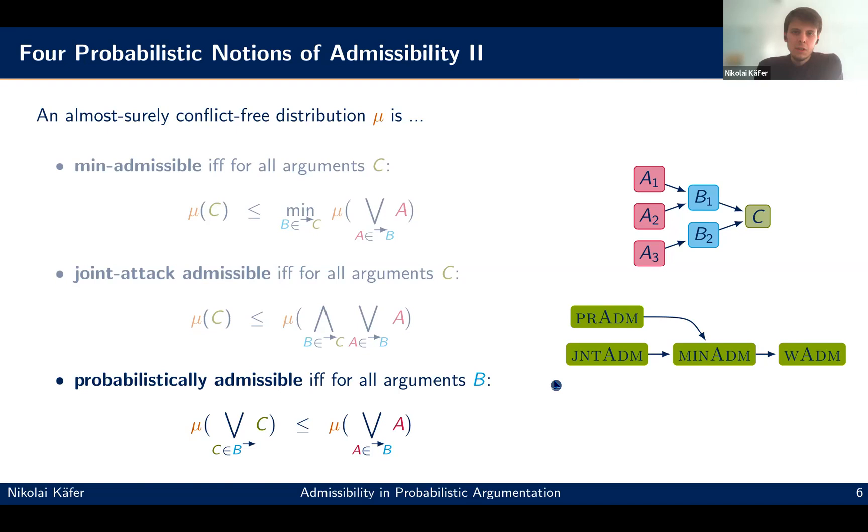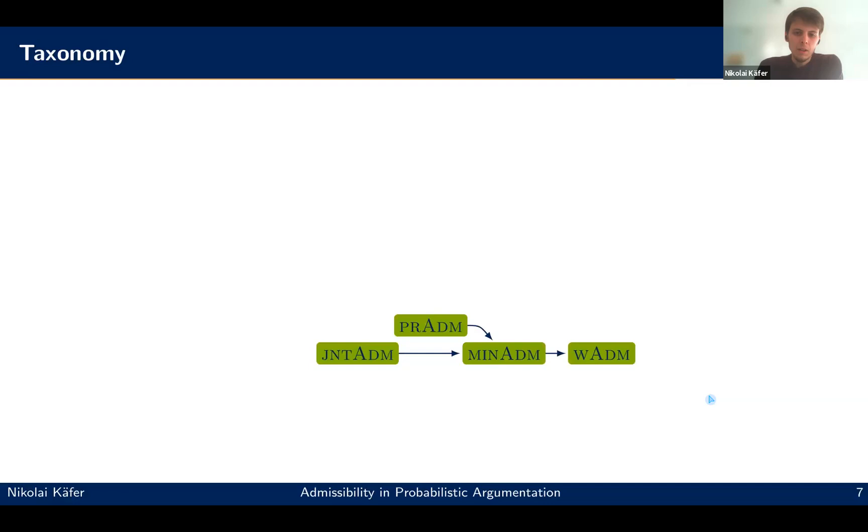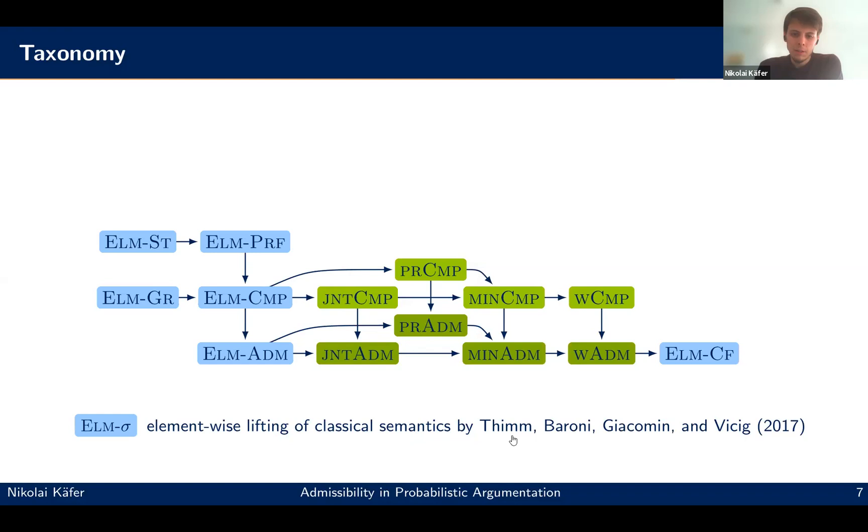So you already saw here the comparison here. We took this a step further and compared. So first of all, we introduced also corresponding notions of completeness. And of course, then each joint complete distribution is also joint admissible and so on.